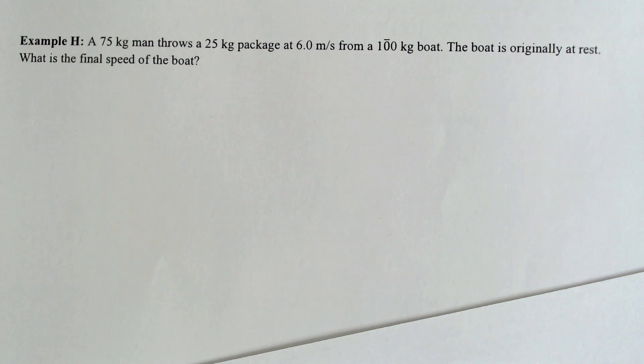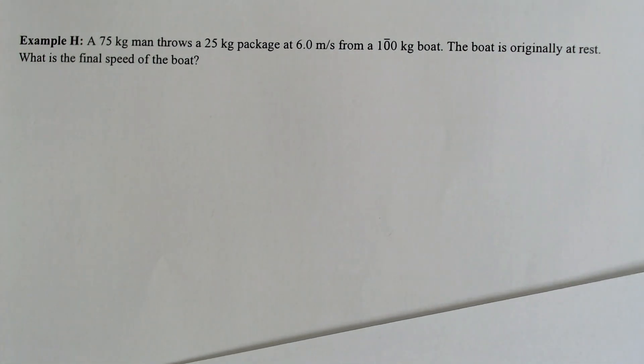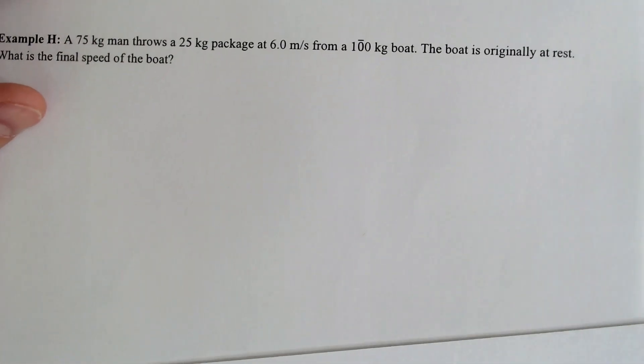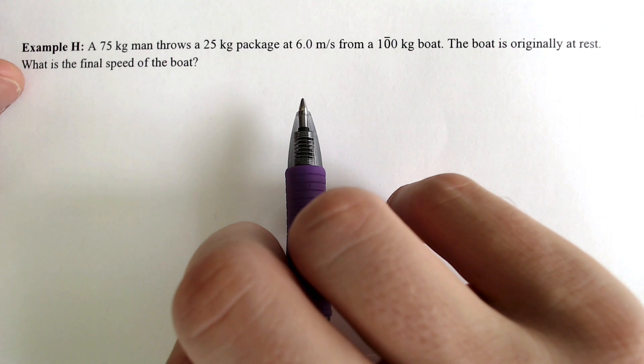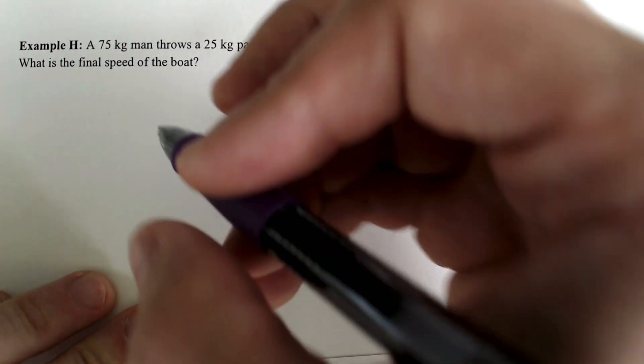This is a very typical question that you see, either on a boat or in outer space, because in outer space, you can't swim in outer space because there is no friction. But you can throw things away from you, and that would actually allow you to be propelled or move in the opposite direction.